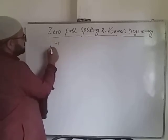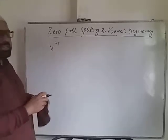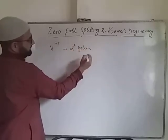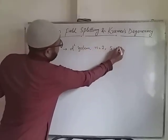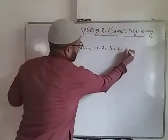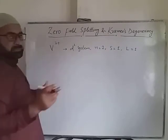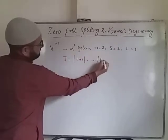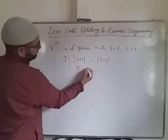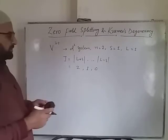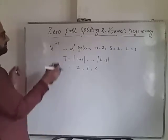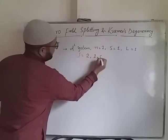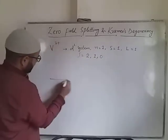Now we take another example — vanadium 3+. In the vanadium 3+ system, it is actually a d2 system, meaning n = 2, S = 1. The orbital angular momentum L is also equal to 1. So the total angular momentum quantum number J will range from L+S to L−S, giving values of J = 2, 1, and 0.